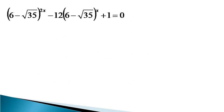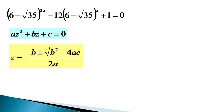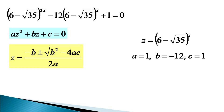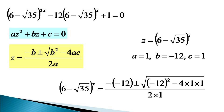When this equation is compared with the standard quadratic equation az² + bz + c = 0, which has the solution z = (−b ± √(b² − 4ac)) / 2a, we find that z is represented as (6 minus √35)^x, and a, b, c are 1, −12, and 1 respectively. So the solution becomes (6 minus √35)^x = (12 ± √(144 − 4)) / 2.